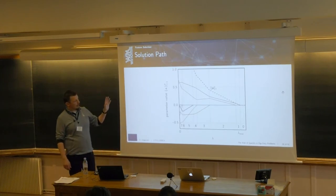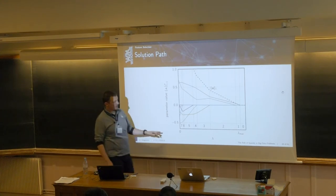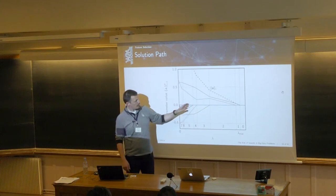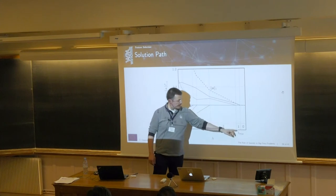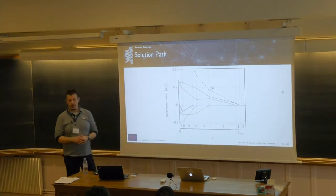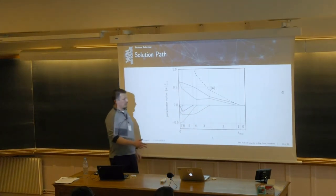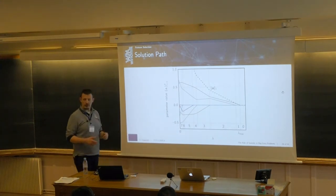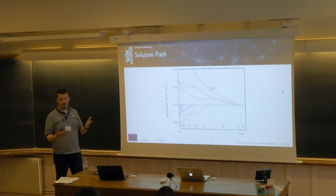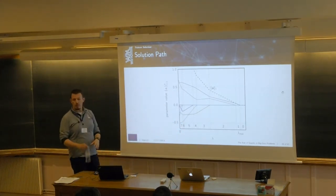The one-variable subproblem yields a soft thresholding solution. When the correlation between the feature corresponding to a₁ and the residual is less than −λ, the solution takes one value; when it is greater than λ, another value; and it is set to zero in between. As λ increases, all entries of a slowly converge toward zero. At λ_max, the only solution has all entries equal to zero. The norm-1 of the solution vector decreases monotonically as λ increases.